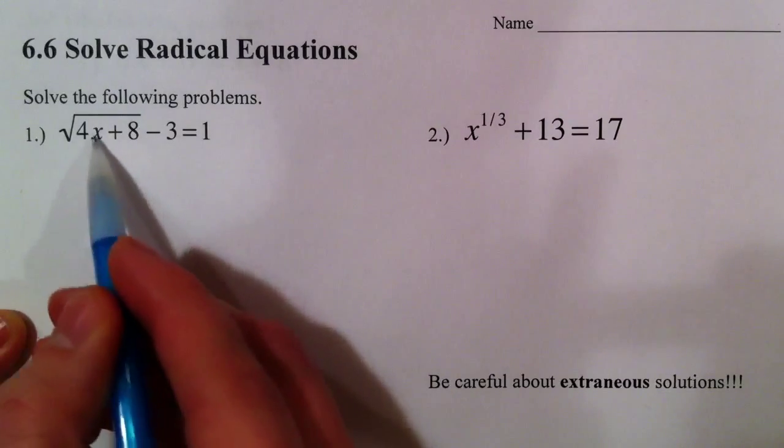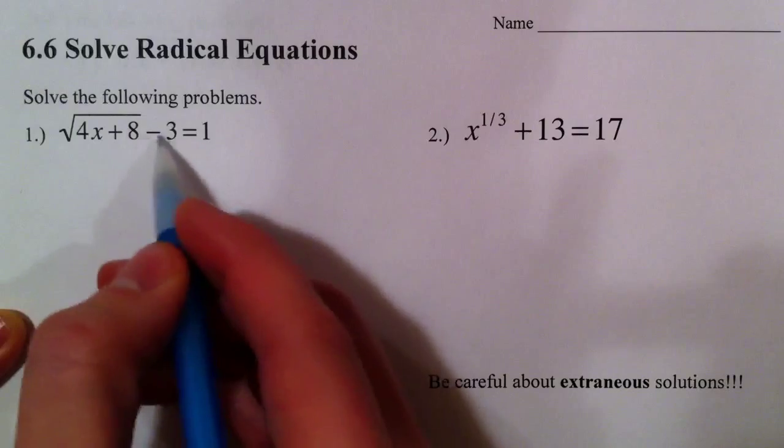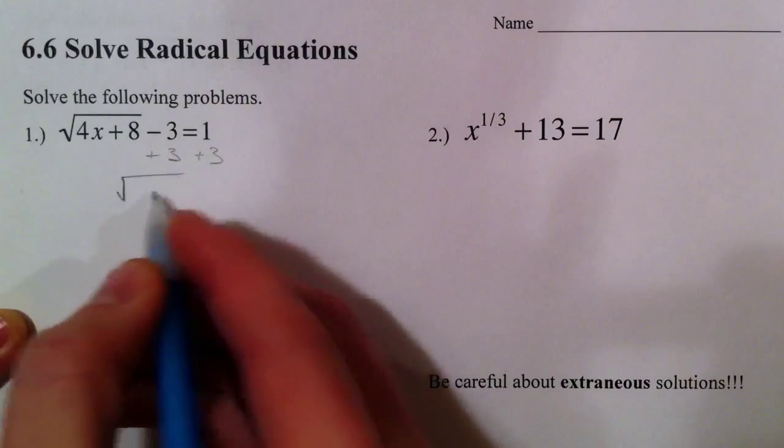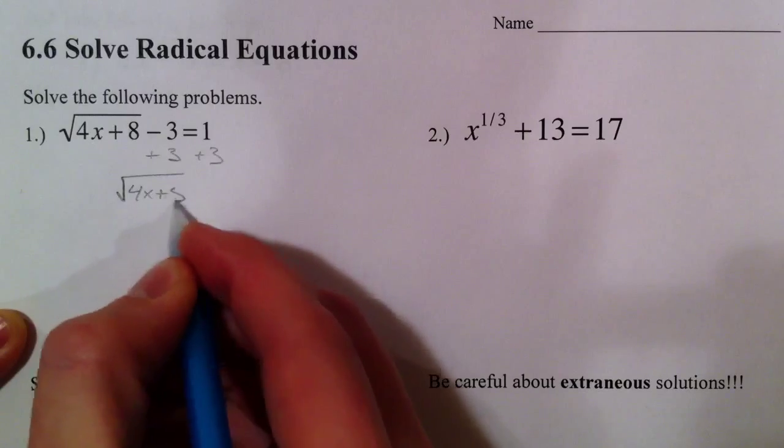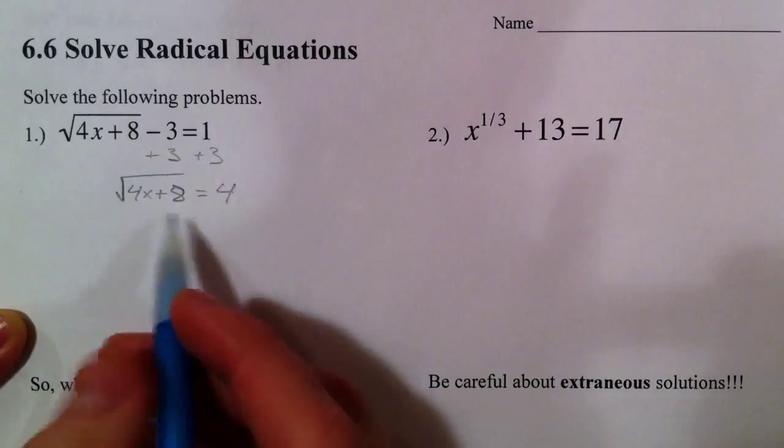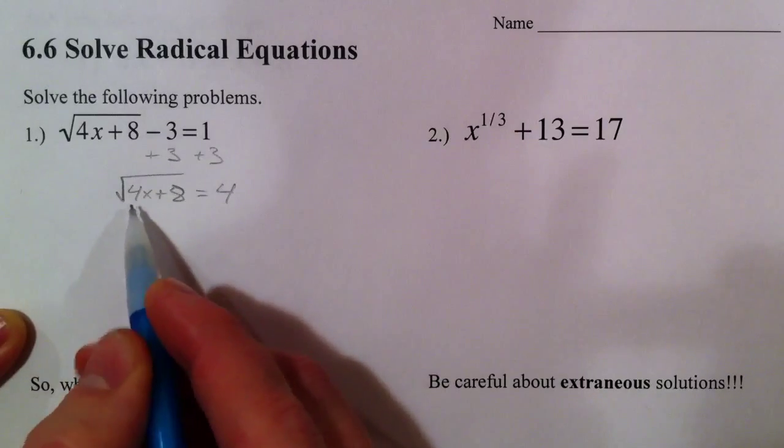The least connected with the x is this minus 3, and so we're going to add 3 to both sides, and so we're left with the square root of 4x plus 8. 1 plus 3 is 4. And now we've got everything stuck in this square root.